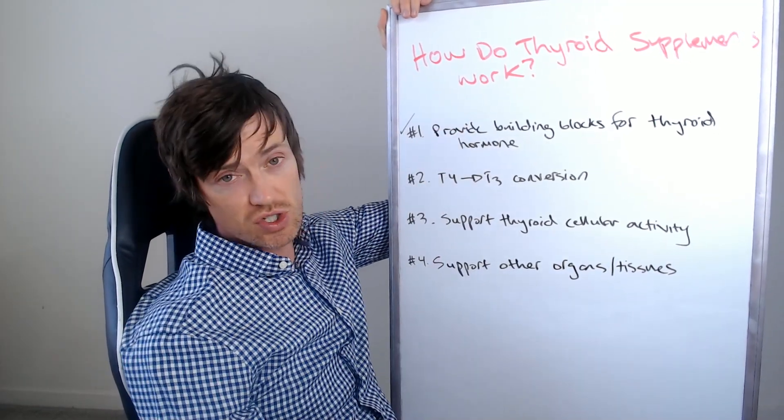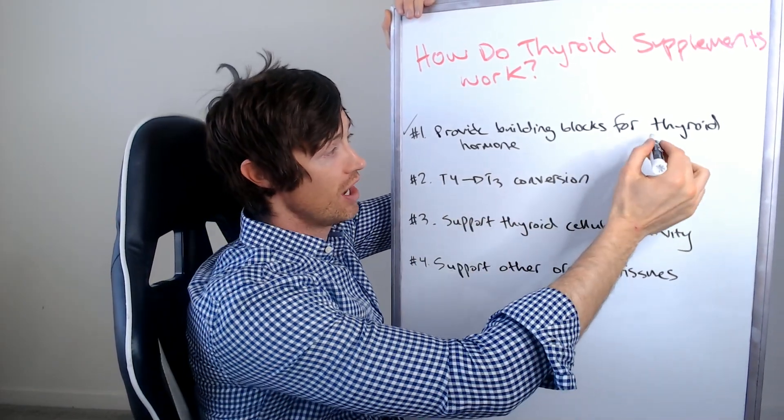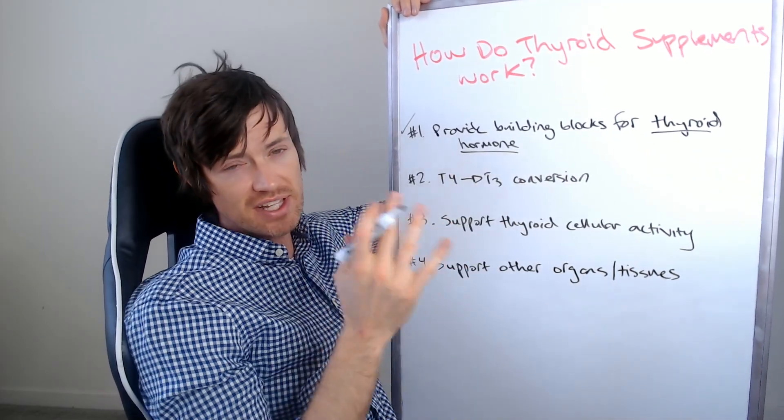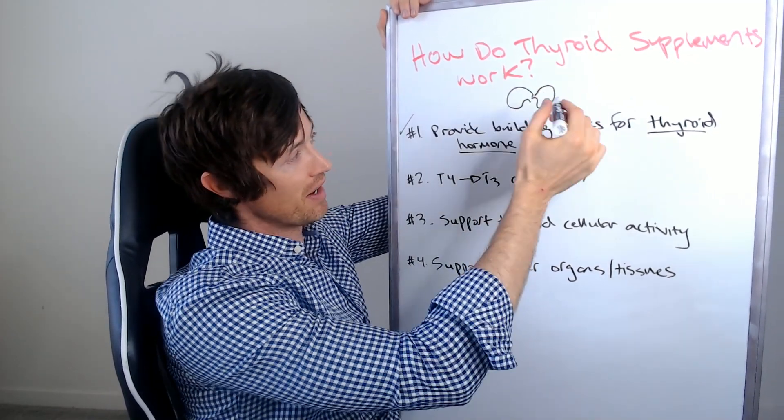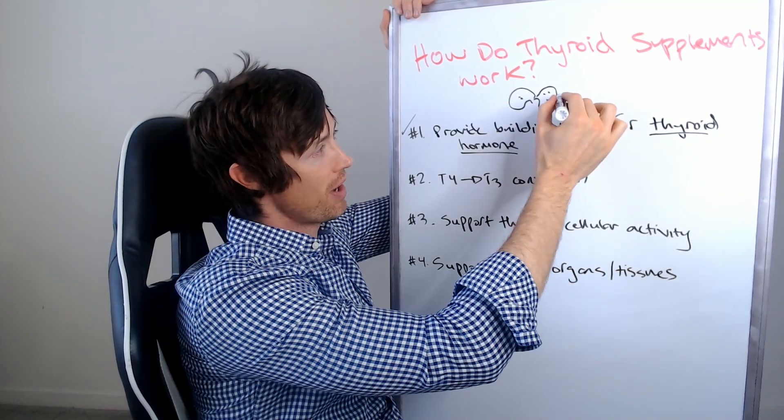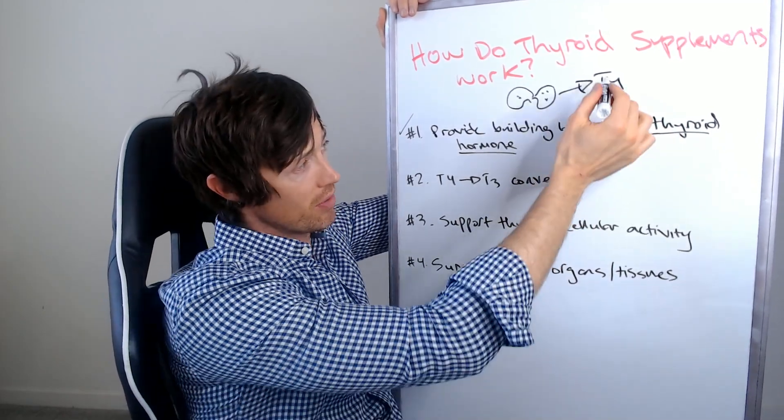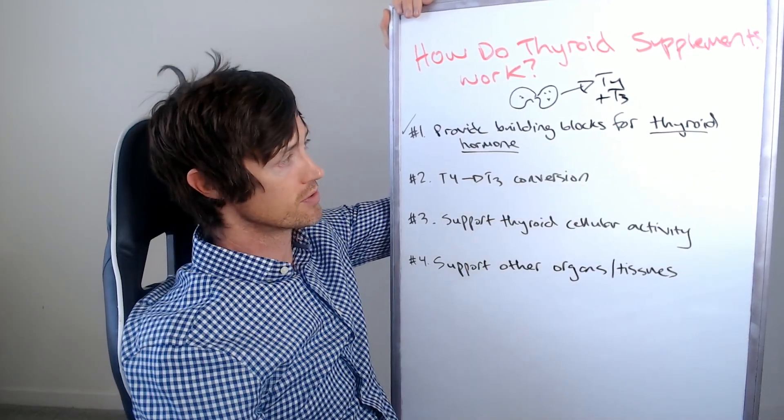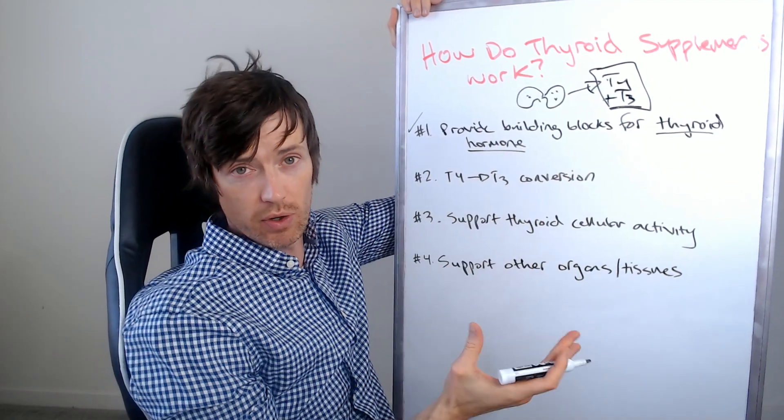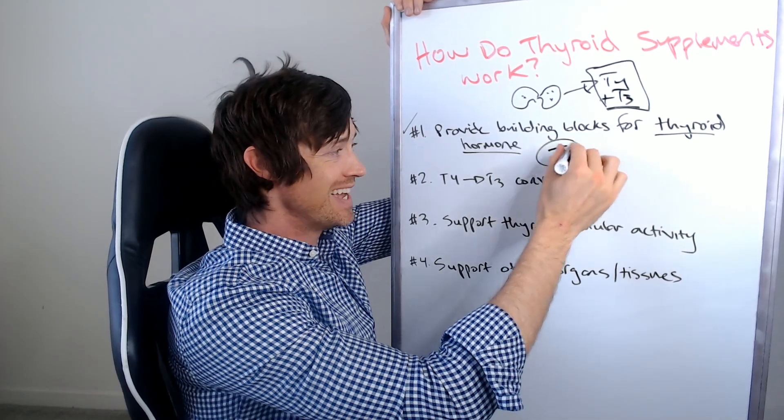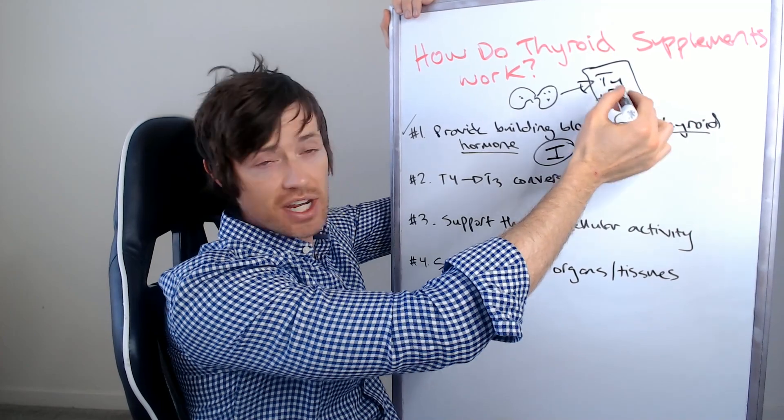So one of the first things that thyroid supplements do is they can provide building blocks as a substrate for the production of thyroid hormone. Okay, if that's a little confusing, let me break it down. So basically what is happening is your thyroid, this is supposed to be a thyroid, not a very good one. Your thyroid is supposed to pump out thyroid hormone, right? So it's pumping out T4 and a little bit of T3. Now in order to do that, by the way, T4 and T3 are your thyroid hormones, but in order to do that, it must have the right building blocks to produce those thyroid hormones. In fact, one of the most important building blocks is iodine, right? If you don't have iodine, you cannot produce enough thyroid hormone.